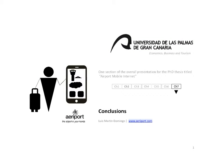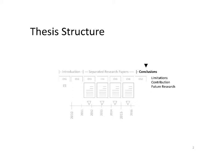This short video summarizes the conclusions, which can be located in Chapter 7 of the thesis titled Airport Mobile Internet. The structure of the thesis is divided into three main parts: Introduction, four research papers, and the conclusions.